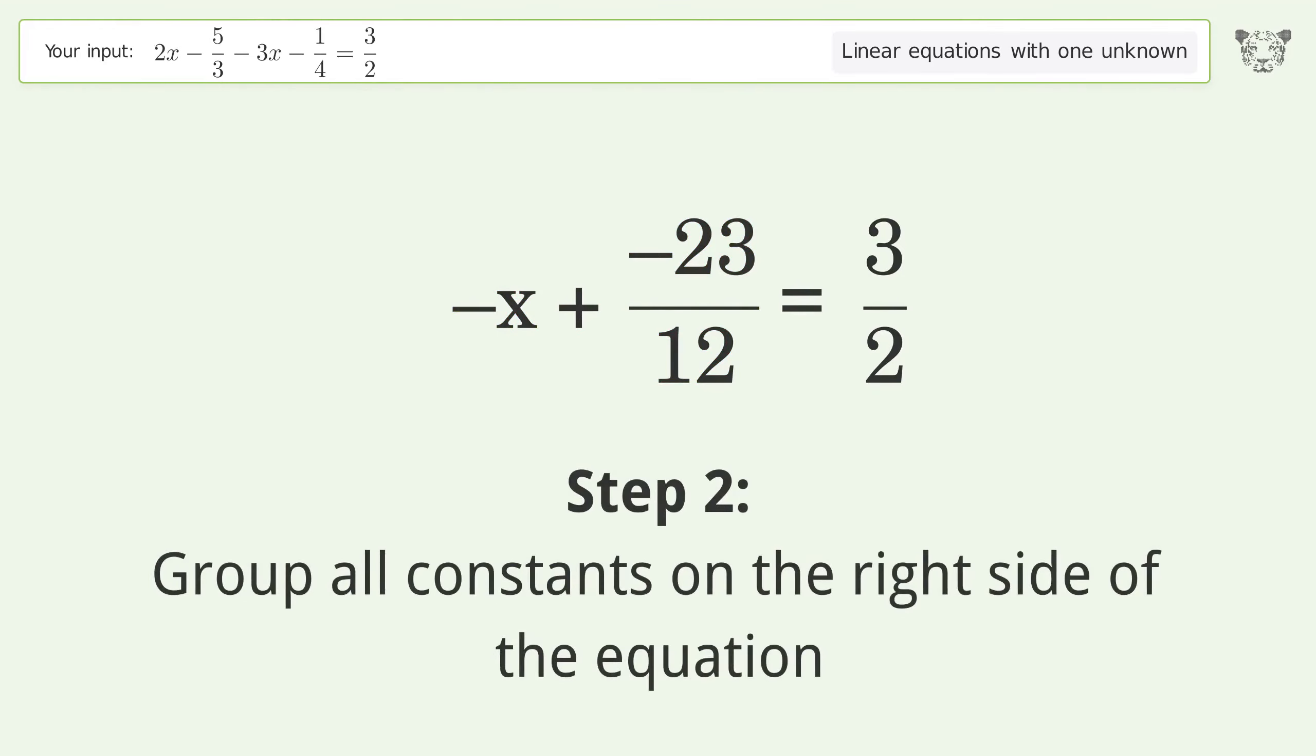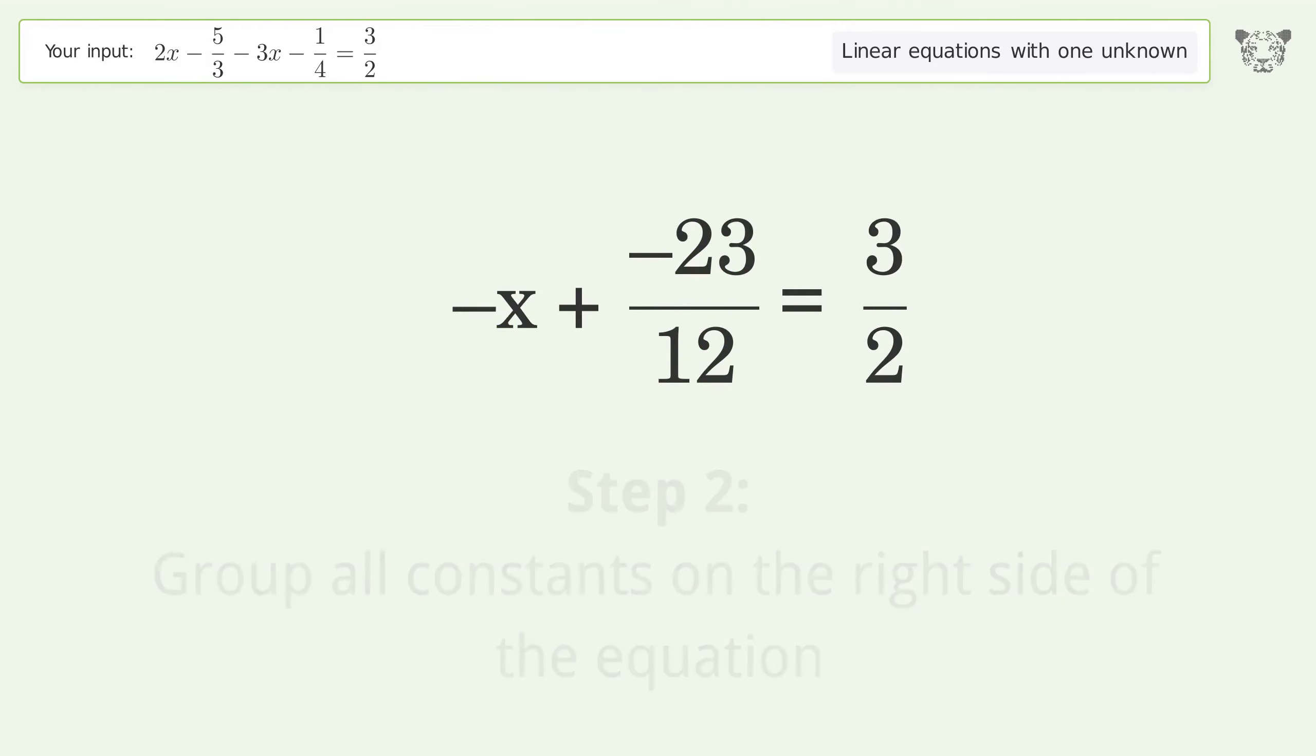Group all constants on the right side of the equation. Add 23 over 12 to both sides.